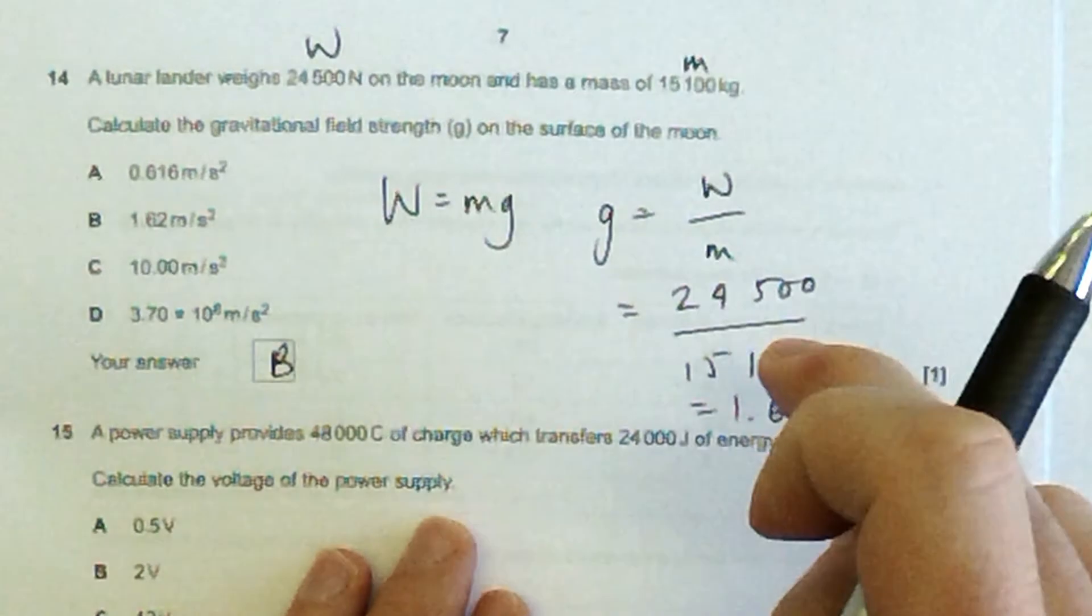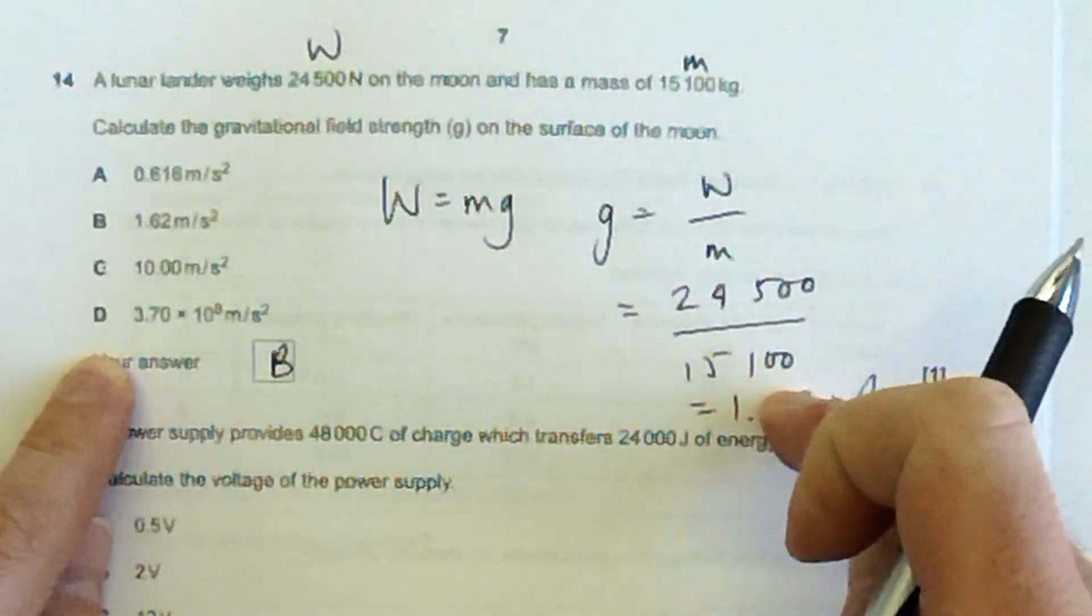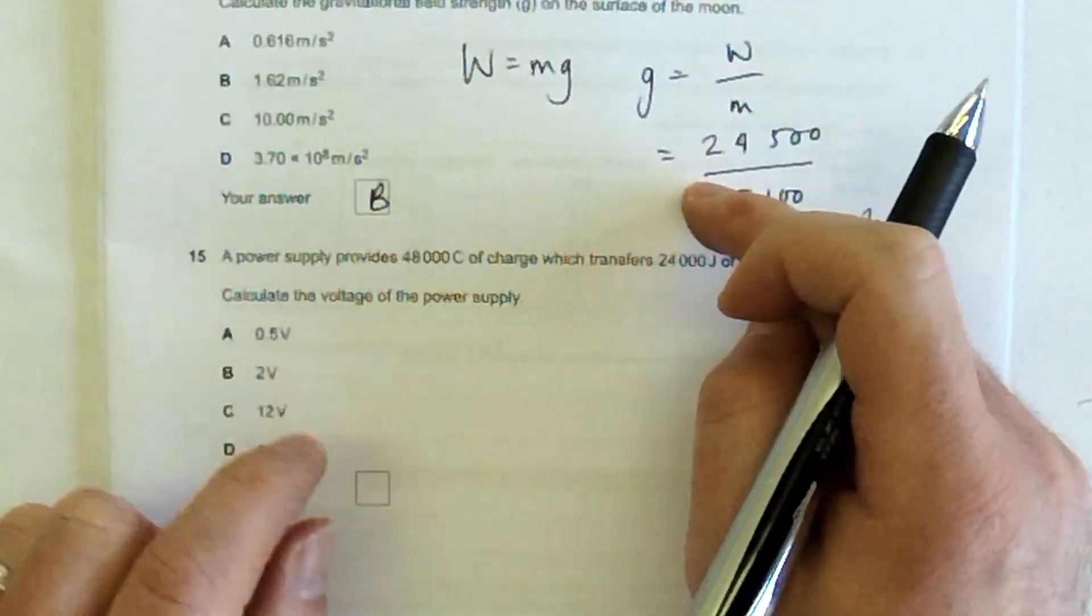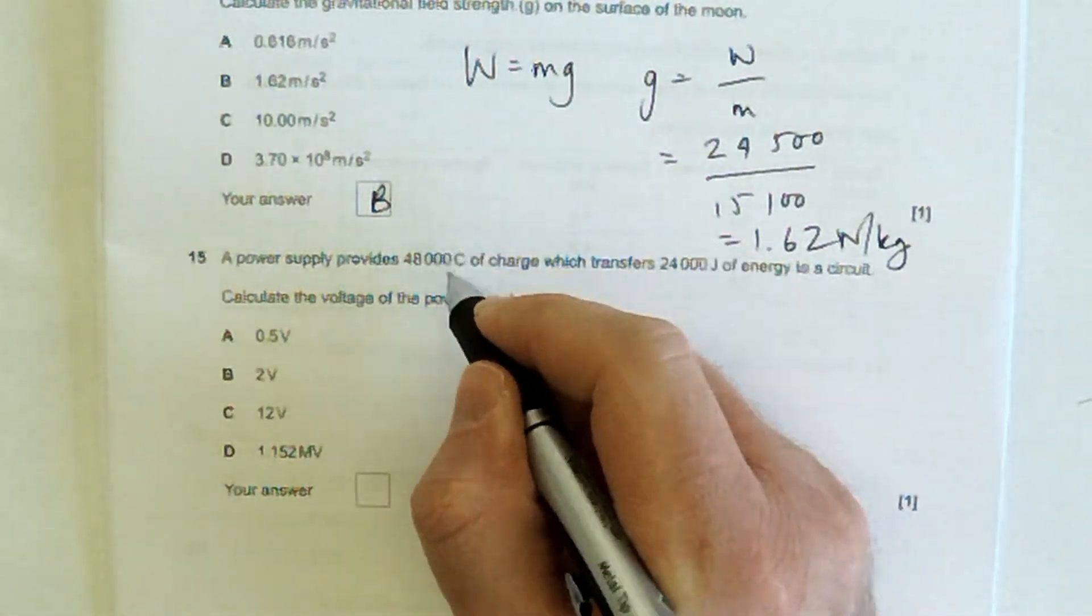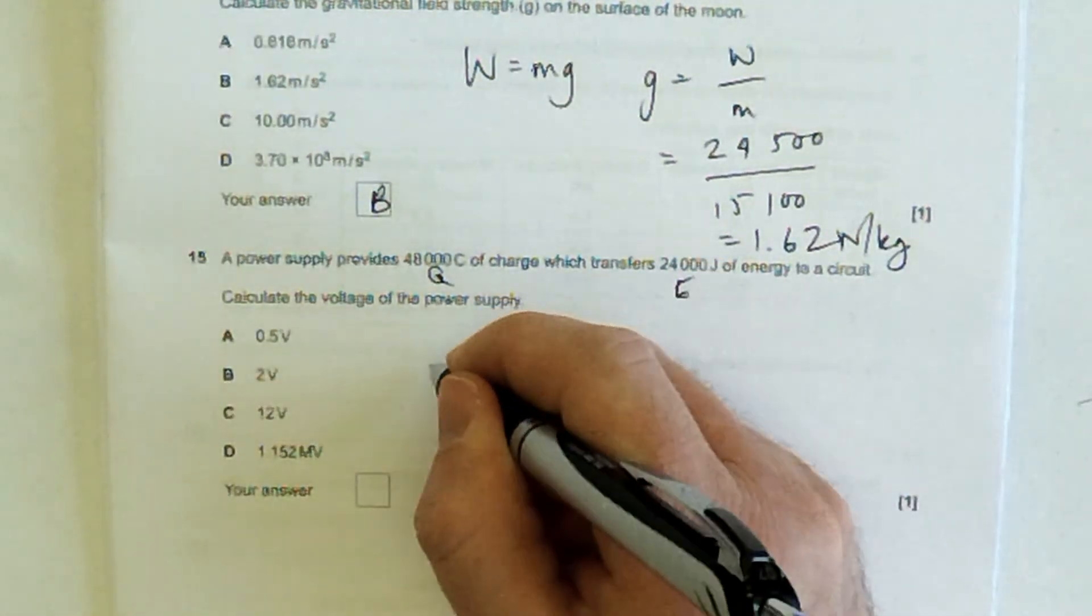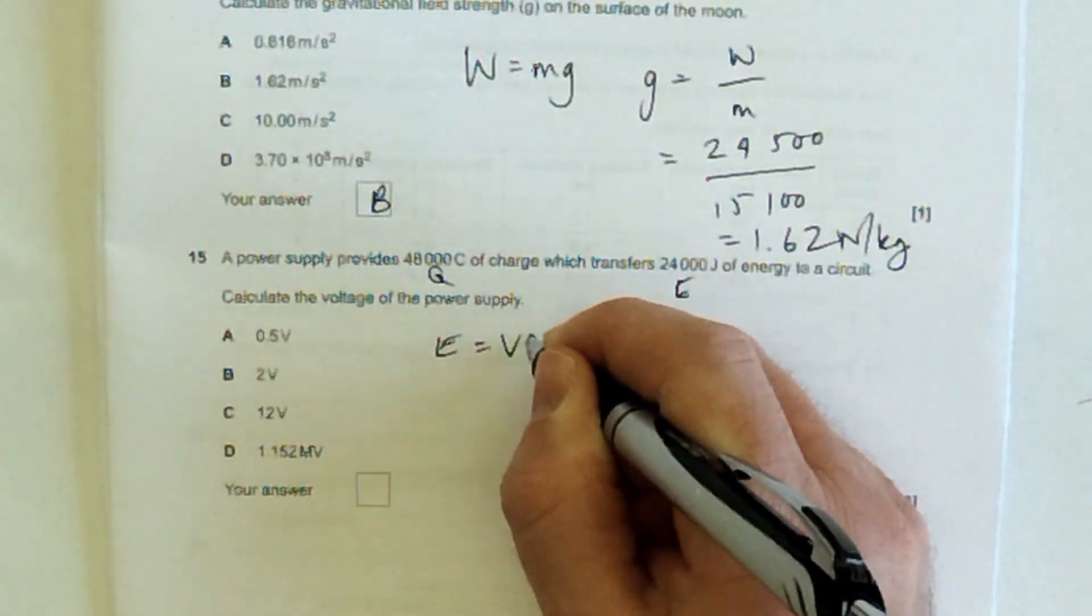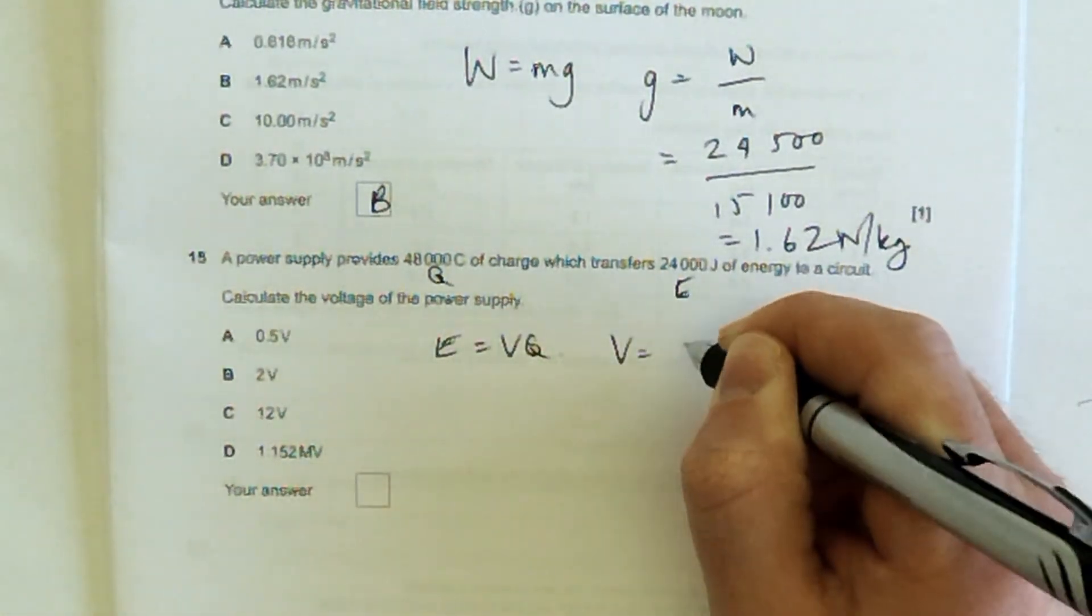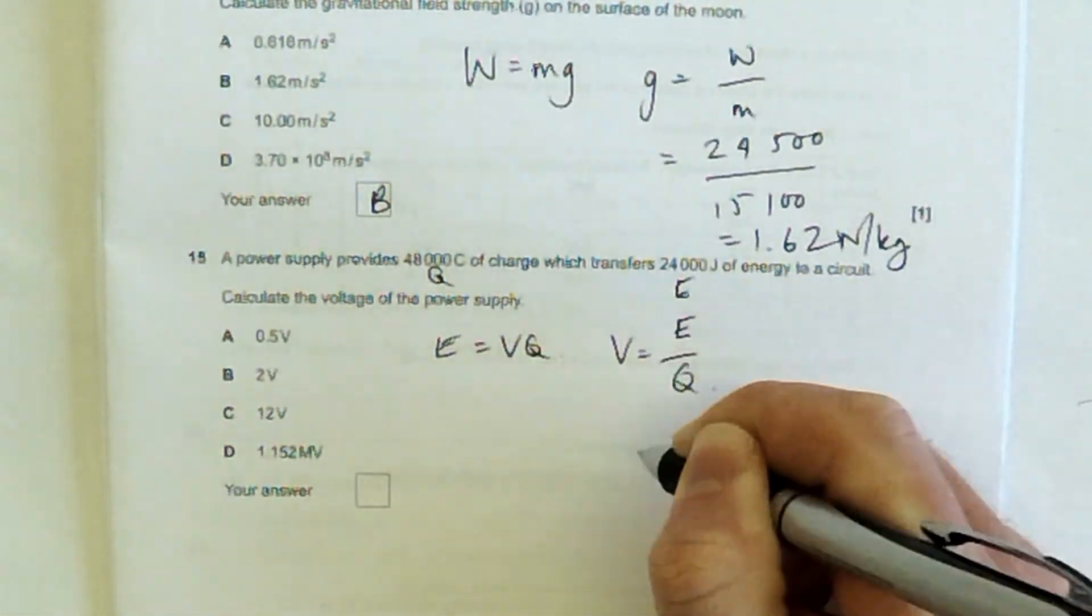Do the calculation. Don't look at the answers until you've done the calculation. A power supply provides 48,000 coulombs of charge, which transfers 24,000 joules of energy to a circuit. Calculate the voltage. Again, do you remember your equations. Energy is voltage times charge, or voltage is defined as energy per unit charge.